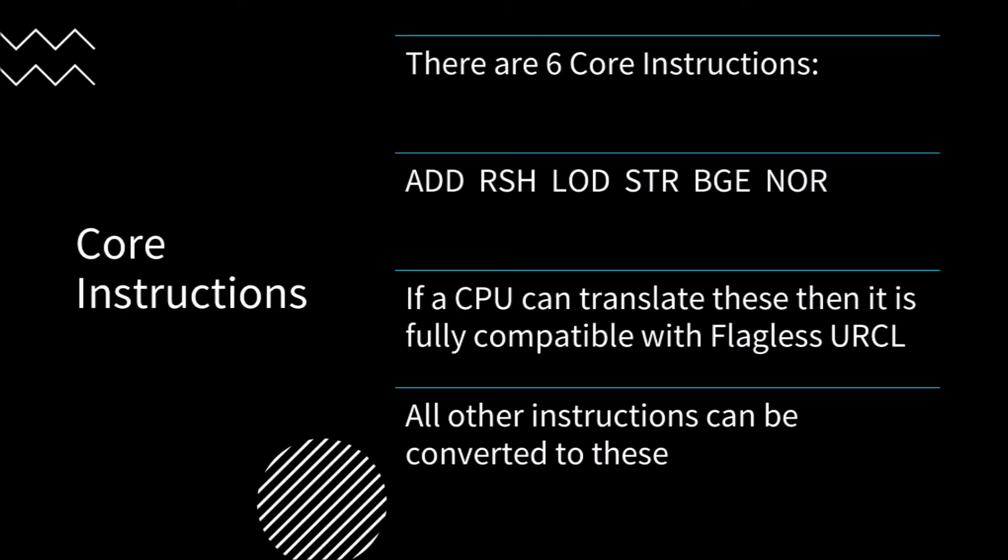There are six core instructions: add, right shift, load, store, branch if greater than or equal to, and NOR. If a CPU can translate these, then it is fully compatible with flagless URCL, since all other instructions can be converted into these. The add instruction simply adds two values together. The right shift instruction performs an unsigned bitwise right shift of a value. Load loads a value from RAM into the registers. Store takes a value from the registers and stores it into RAM. Branch if greater than or equal to will branch to a location if one value is greater than or equal to another value. NOR performs a bitwise NOR logical operation on two values.